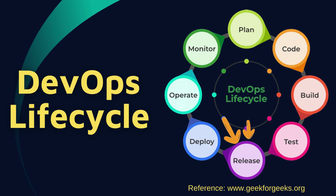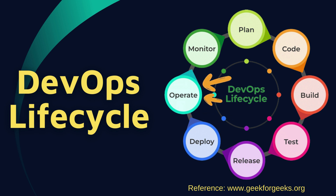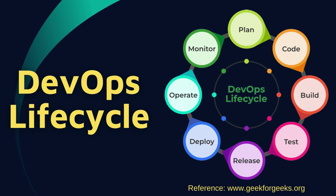After that we have Release — where we prepare code for deployment and ensure it's stable and meets release criteria. The sixth step is Deploy — automation deploys code to the production environment, minimizing human errors. Next is Operate — managing applications in production to ensure stability, performance, and availability. The last step is Monitor — continuous monitoring tracks application performance, user experience, and potential issues for swift response and improvement. These are the lifecycle stages each application goes through.